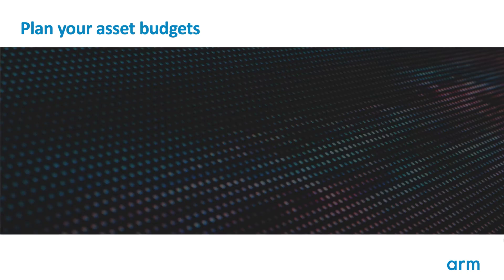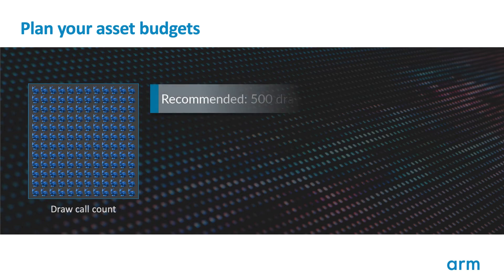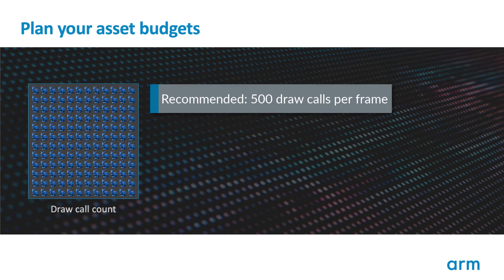The second stage of budgeting is looking at your asset budgets. There are three major areas to consider. Draw calls are one of the most expensive CPU-side operations that the driver performs. To avoid high CPU power consumption or CPU-side performance critical paths, our recommendation is to aim to keep the total around 500 draw calls per frame. This can be exceeded — content can run on a high-end device with over 1,000 draw calls a frame and still not be CPU-bound — but will incur higher CPU power consumption due to the higher load levels.